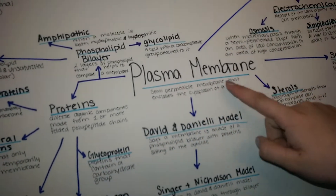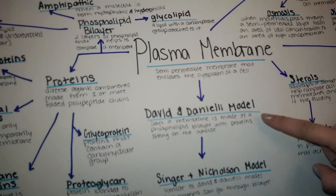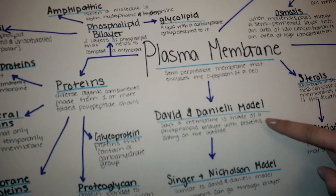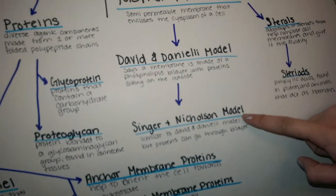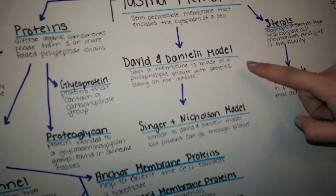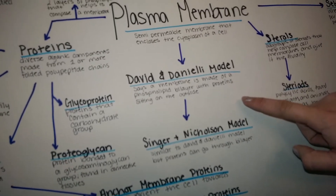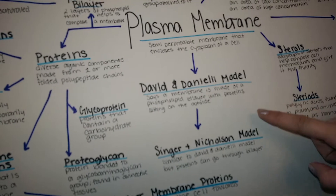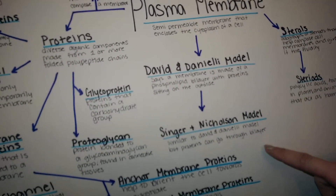There are a couple of different models. There's the Davson and Danielli model, which says that the membrane is made of a phospholipid bilayer with proteins sitting on the outside. And then the most recent version is the Singer and Nicholson model, which is similar but instead of the proteins sitting on the outside, the proteins go through the phospholipid bilayer.